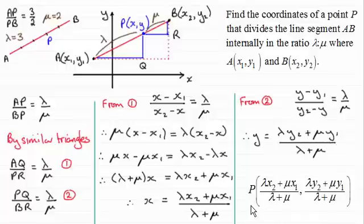So what we have now then are the x and y coordinates of our point P, and I think it's very easy to remember because both the x and y coordinates have the same structure. All you've got to do is just take your first ratio here, lambda, and then multiply it with the second x or y coordinate depending on which one you're going for. And then plus mu times the first x or y coordinate, depending on whether you're going for x or y here. And then you divide it by the sum of these two ratios.